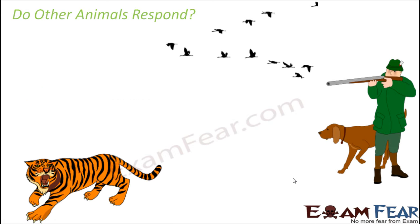Now, do other animals also respond? You might think other animals are not intelligent enough to respond to stimuli, but that's not the case — all animals respond. For example, if a hunter in the forest takes out his gun and fires, upon hearing that noise the birds start flying and the tiger starts running and hiding. This happens because the animals are responding to the stimulus. The stimulus is the firing of the gun; hearing that sound, the tiger and the birds feel a hunter is nearby and they run away — that is a kind of response.